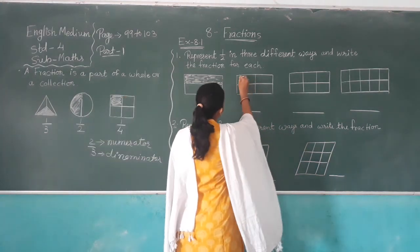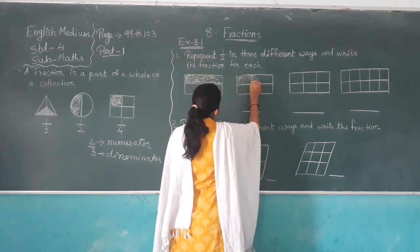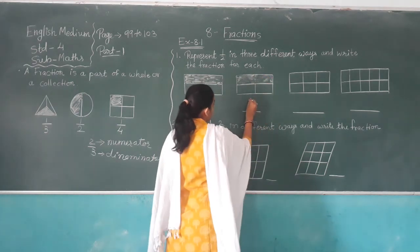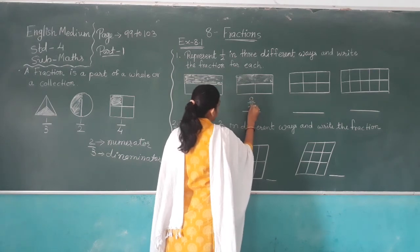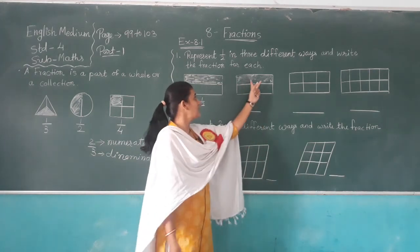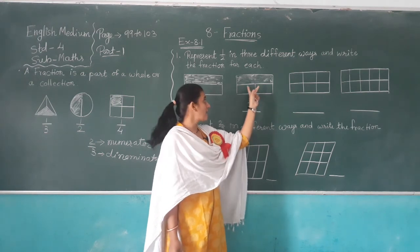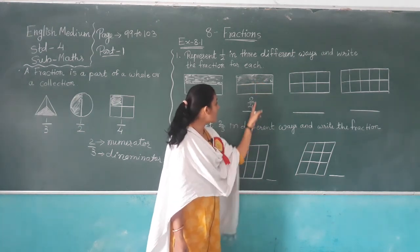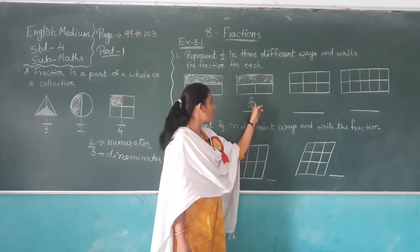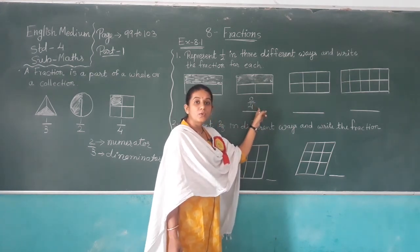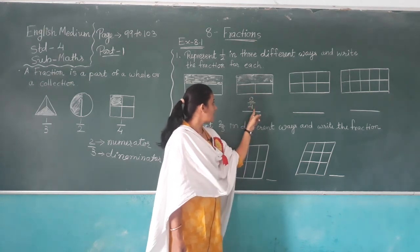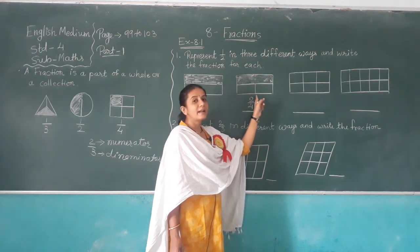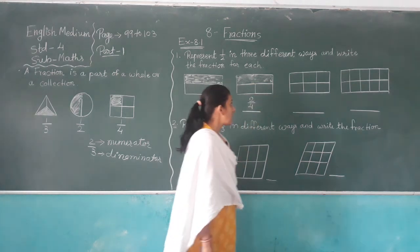This rectangle is divided into four parts and two parts are shaded, that means two out of four. Here two parts are shaded and two parts are blank. Total parts are four, so write four in the denominator place. In the numerator place, two parts are shaded, so write two.